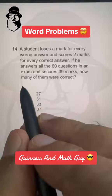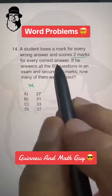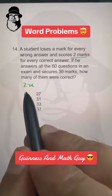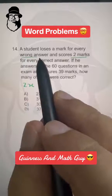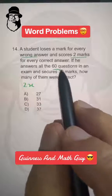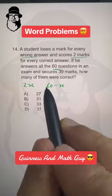Let's say the number of correct answers is X and he gets two marks for every correct answer, so times 2. And the number of wrong answers is, total questions are 60, so 60 minus X correct answers.